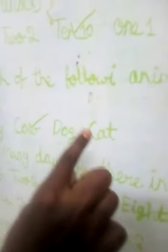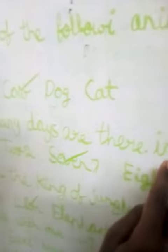Which of the following animals gives us milk? Monkey, cow, dog, or cat? Cow is the correct answer. How many days are there in a week? 5, 2, 7, or 8? 7 is the correct answer.